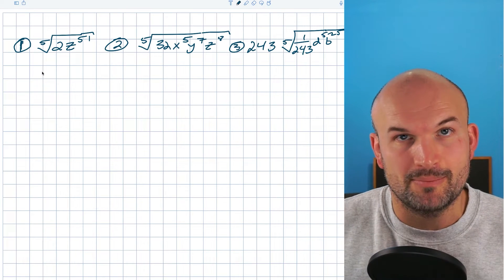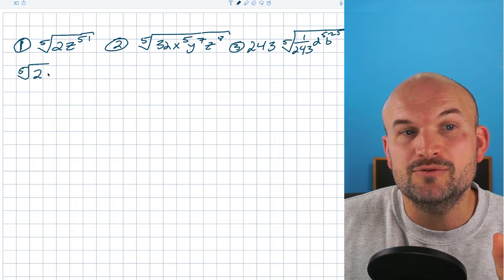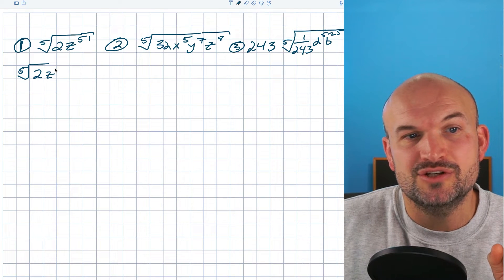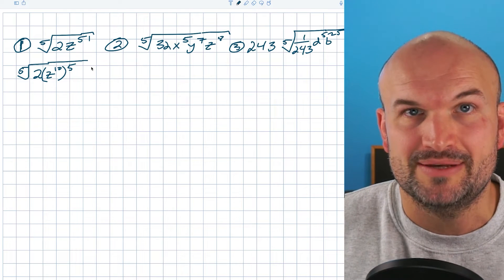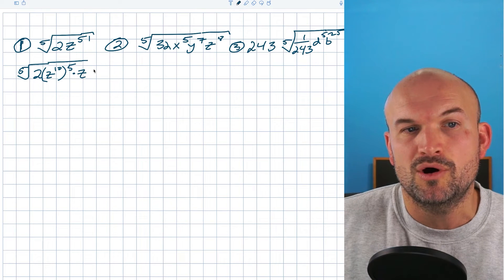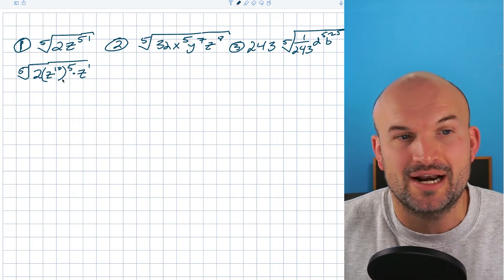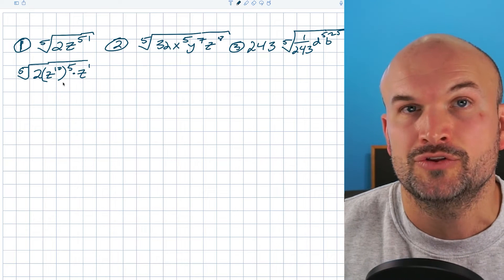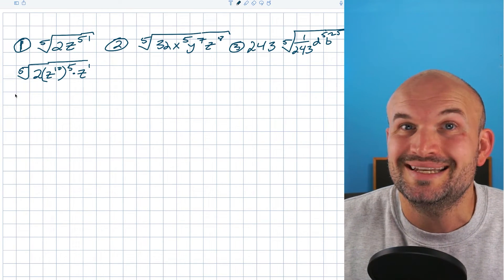So I want that power, that upper power to be a five. So what I can do is I can take the fifth root here of two, and I can rewrite z to the 10th raised to the fifth power. Now that does not give me 51, but that gives me 50. So if I need to get to 51, then I can just multiply by one more z to the first. I can't simplify that, but that's fine. Whatever cannot be simplified has to remain under the radical.